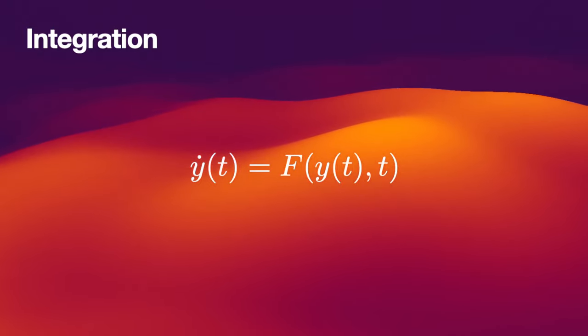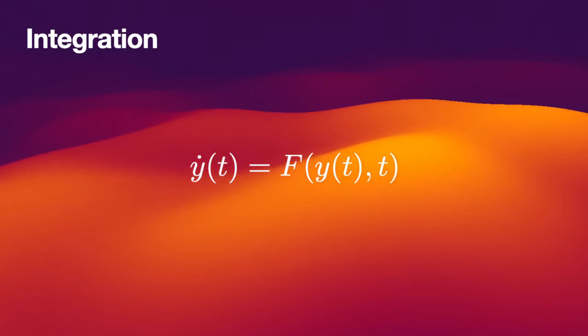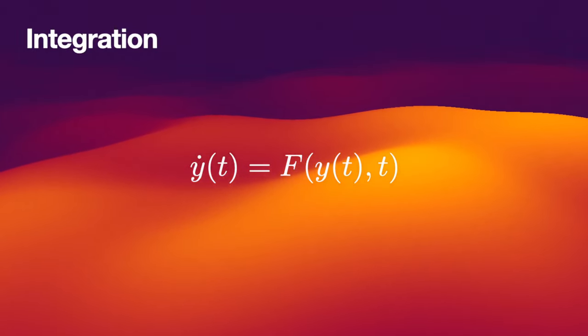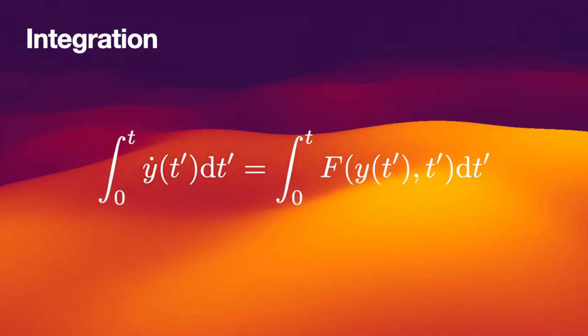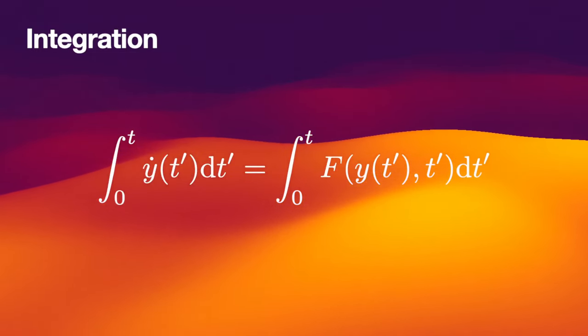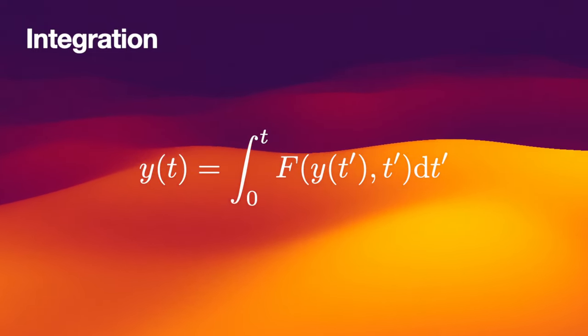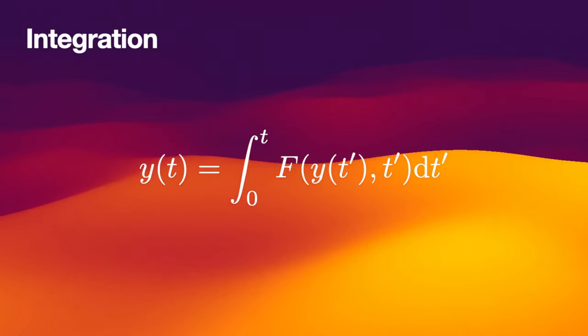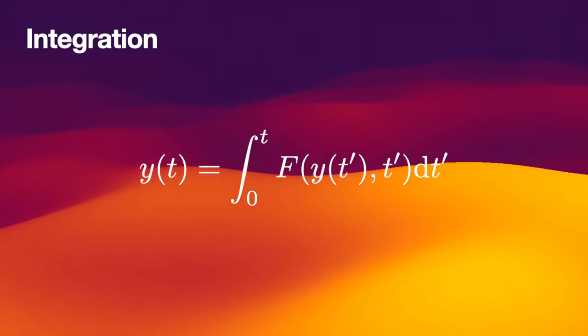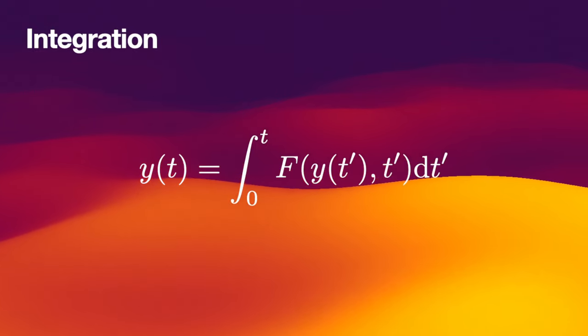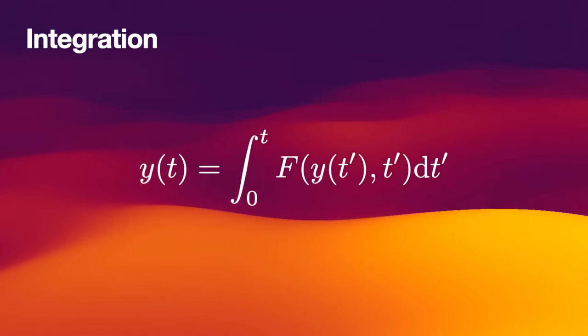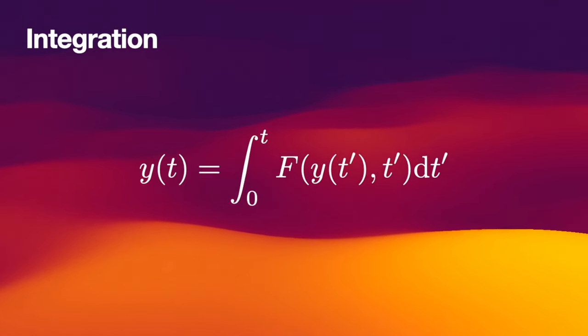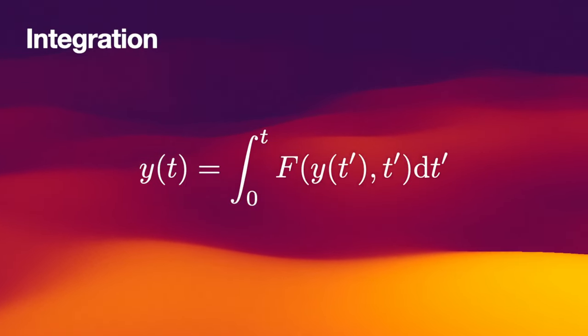The trick that IAS15 uses is to rewrite this differential equation as an integral. For that, we simply integrate over both sides. Then the left-hand side becomes y of t. So we can express the solution y of t as an integral over f. We've converted a differential equation into an integral, and we now need to approximate this integral on the right-hand side.